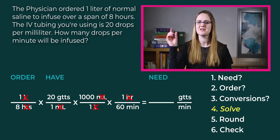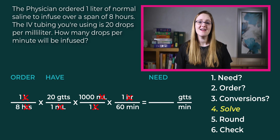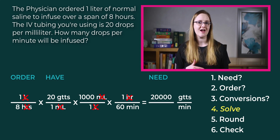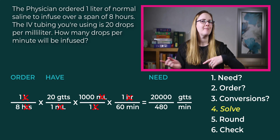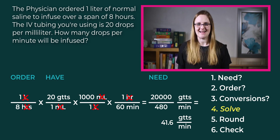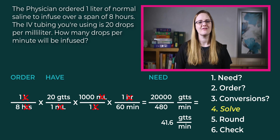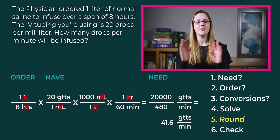Now that all conversion factors are in place and we have the right units on top and bottom, step number four is to multiply straight across the top of the railroad tracks and multiply straight across the bottom, then divide those two numbers. On top: 1 × 20 × 1,000 × 1 = 20,000. On the bottom: 8 × 1 × 1 × 60 = 480. Then divide: 20,000 ÷ 480 = 41.6 drops per minute.